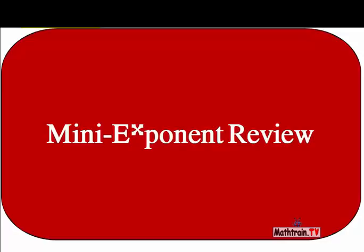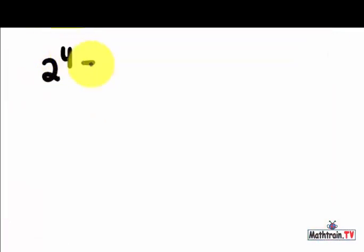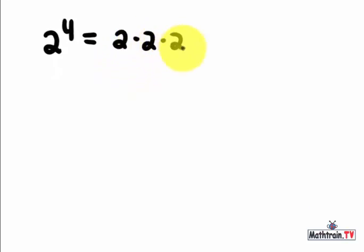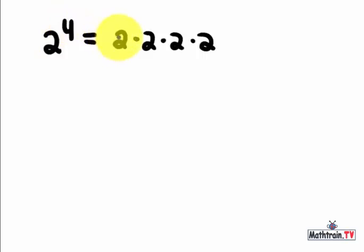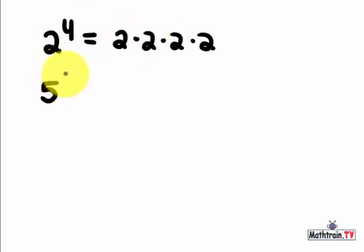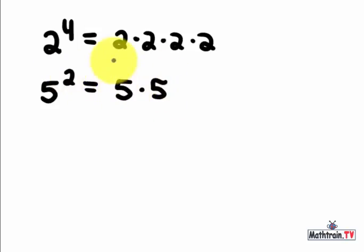Let's talk some more about exponents. If I had two to the fourth power, I can expand that as two times two times two times two. Two is the base, four is the exponent, and we write this as two being used four times as a factor. If I had five to the second power, well now five is the base, and it's being used twice as a factor, so I'd write five times five.